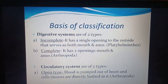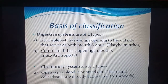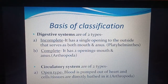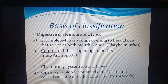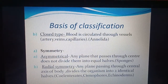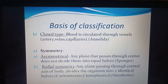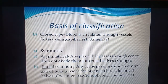The circulatory system is of two types. Open type: blood is pumped out of the heart and cells and tissues are directly bathed in it. The blood does not flow into vessels; it flows around the cells and tissues, which are continuously dipped in blood. The spaces are called sinuses. Example: arthropoda. In the closed type, found in more developed animals, blood is circulated through vessels — the heart pumps blood into arteries, veins, and capillaries. Example: annelida, which includes earthworm.